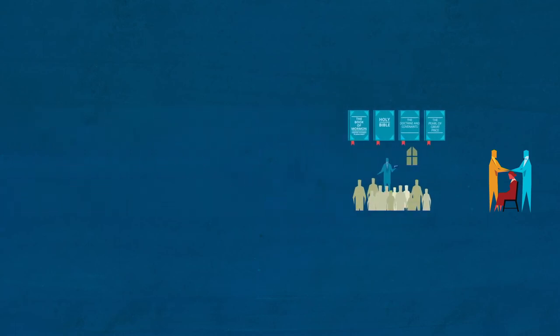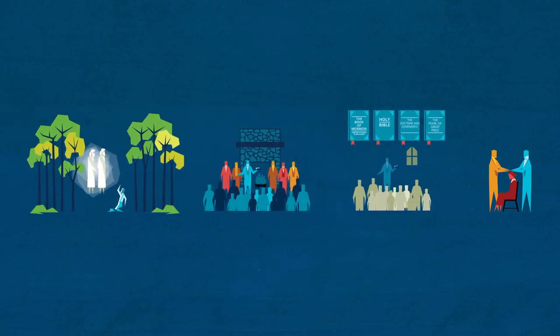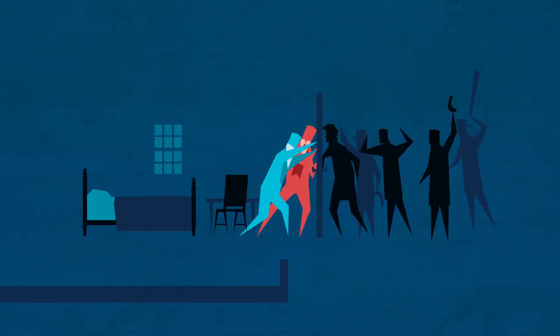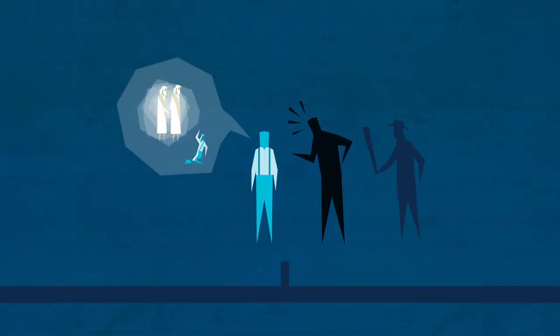Joseph Smith accomplished all of this while facing great persecution throughout his life. Indeed, from the time of the first vision to his death at the hands of an angry mob when he was 38, Joseph faced great opposition because of his message.